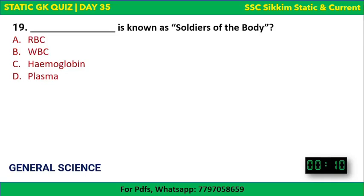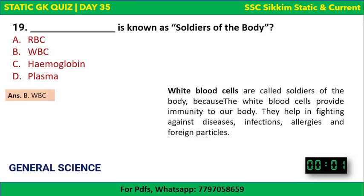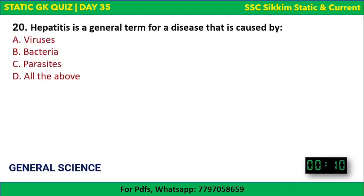Next question: which is known as the 'soldiers of the body'? Options: red blood cells, white blood cells, hemoglobin, or plasma. The correct answer is white blood cells (also called white blood corpuscles). They are called soldiers of the body because they provide immunity, helping fight diseases, infections, allergies, and foreign particles.